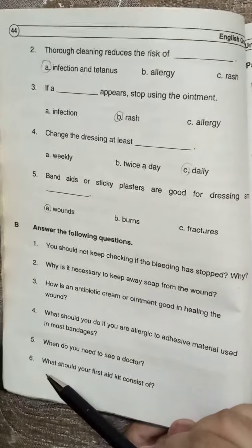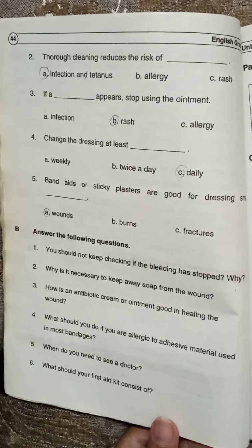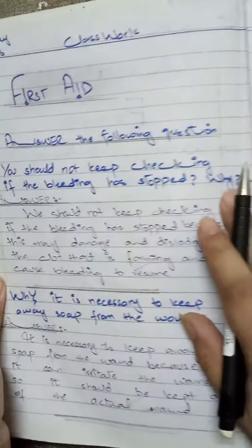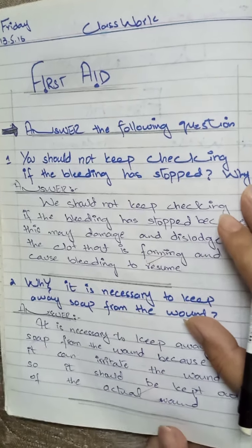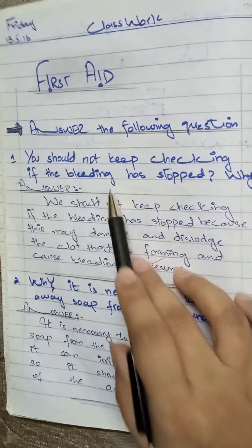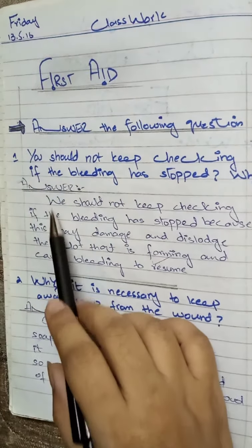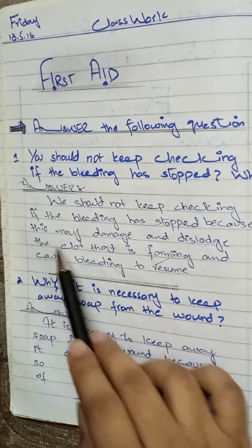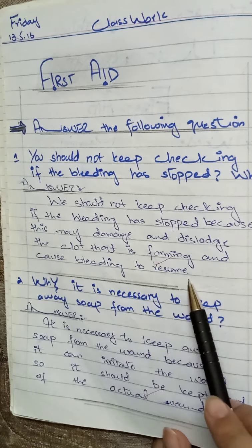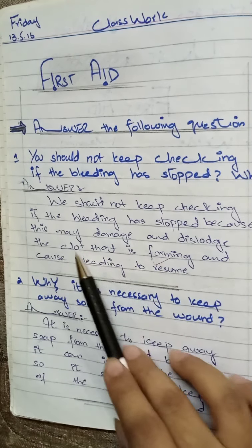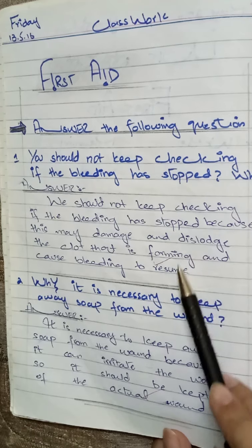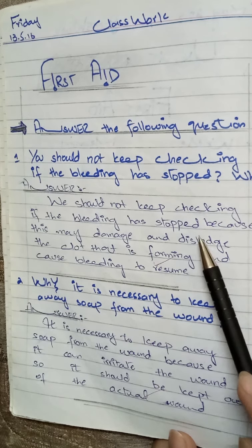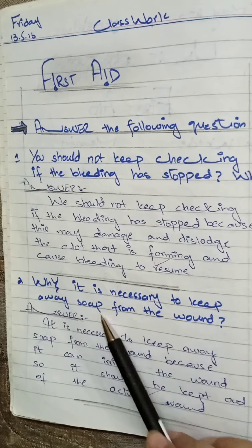Now answer the following questions. Six questions are given in your book and you have to answer them on your own. Question number one: Why should you not keep checking the wound if the bleeding has stopped? Because it may damage the clot that is forming and cause bleeding to resume.